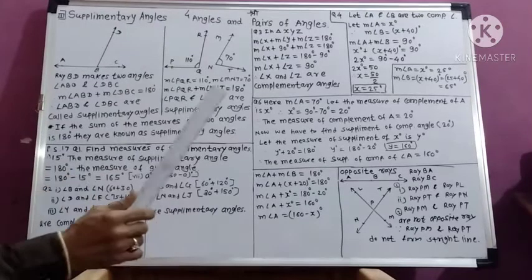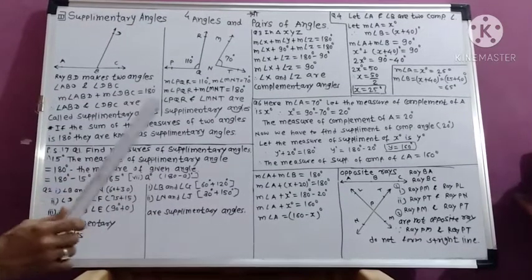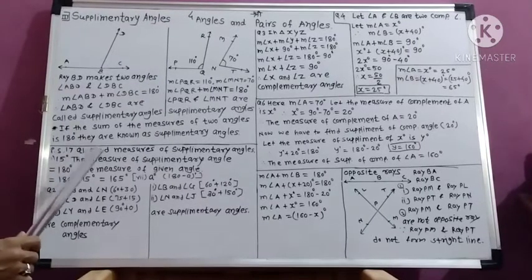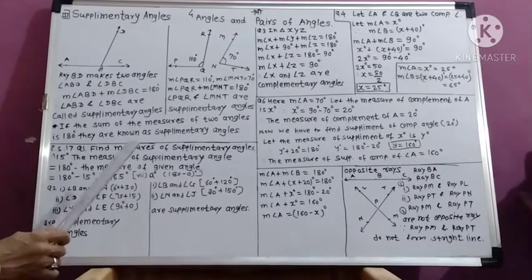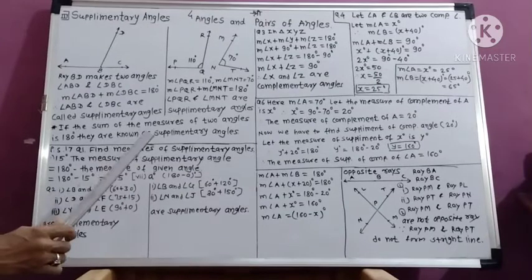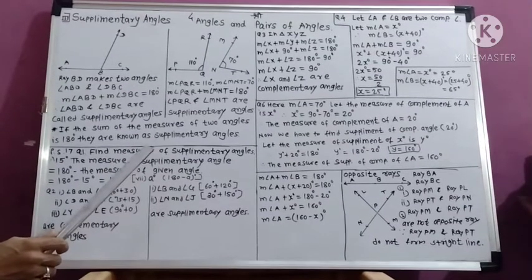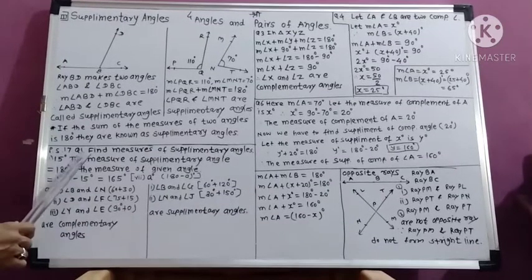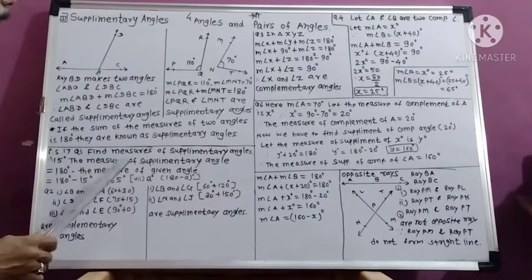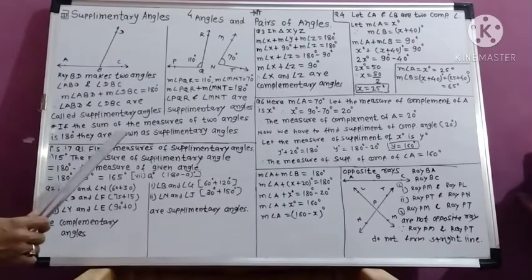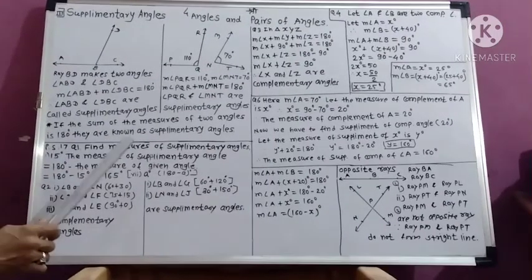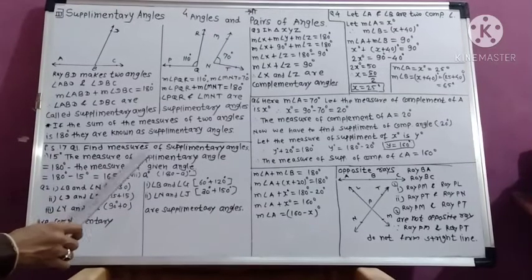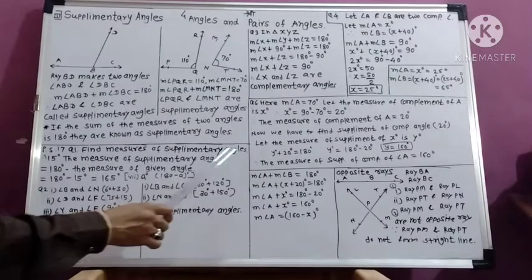Now we will understand some examples from Practice Set 17 in our maths book. In question 1, we are given different measures of angles from examples 1 to 7, and we have to find the measure of the supplementary angles.